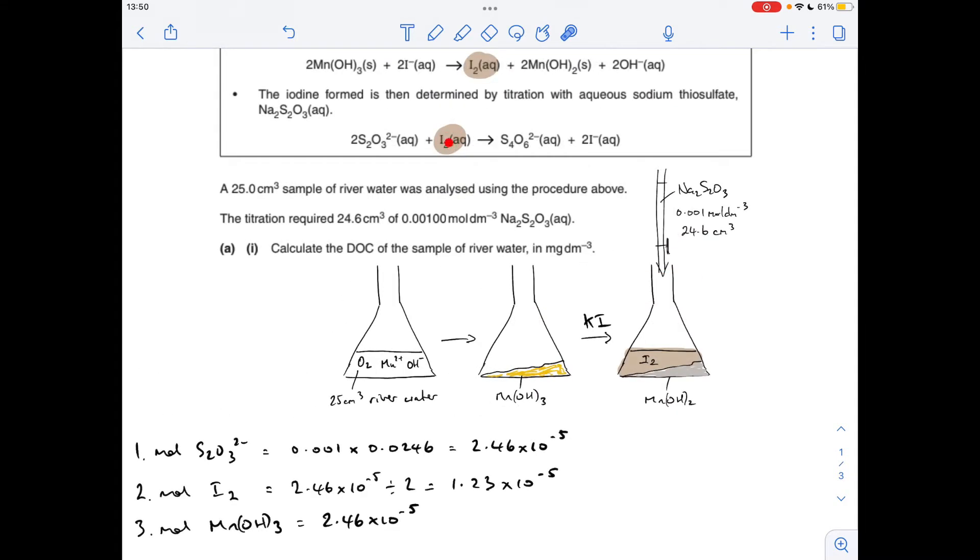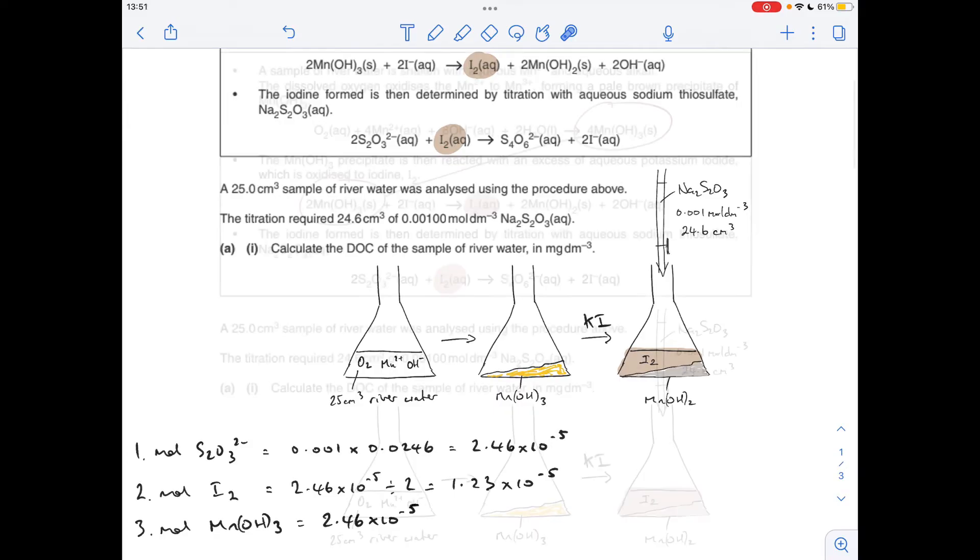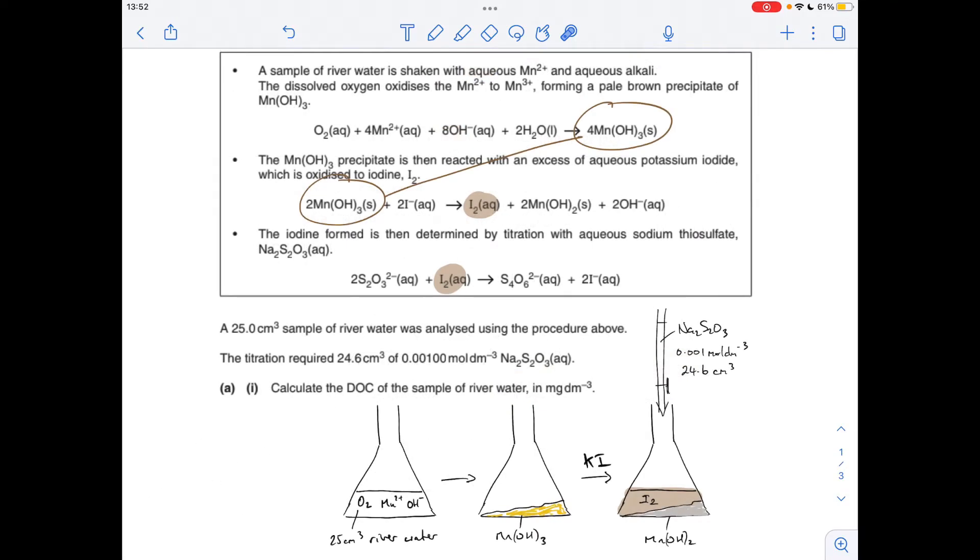The moles of iodine in the titration are those moles of iodine there that were generated by this reaction, so we just apply that mole ratio, and we double back to get the moles of Mn(OH)₃. So we get back to that 2.46 times 10 to the minus 5. And now we've just established the moles of the Mn(OH)₃, so now we can apply this mole ratio to get the moles of oxygen that were in the 25 cm³ sample of river water.